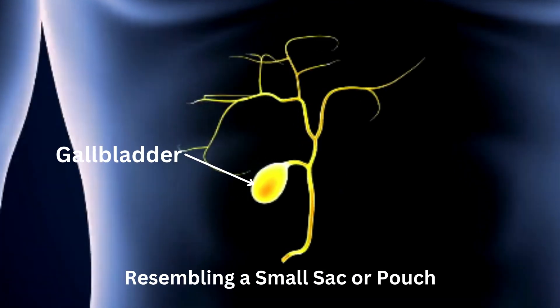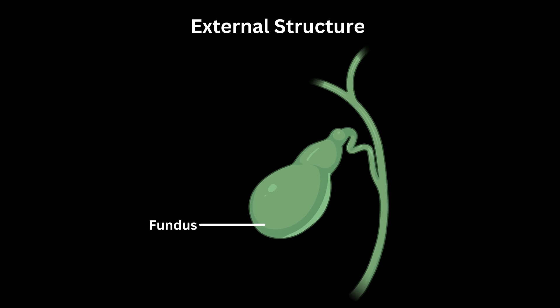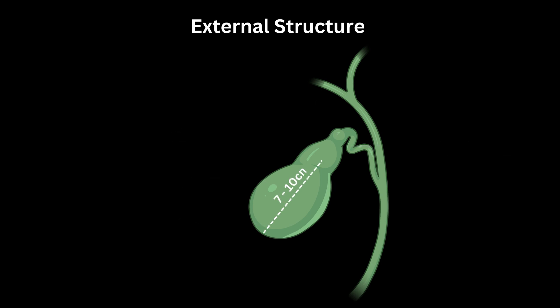It has a wider rounded end called the fundus, a narrower body, and a tapered neck that connects to the cystic duct. The size of the gallbladder can vary, but it is generally around 7 to 10 centimeters in length.